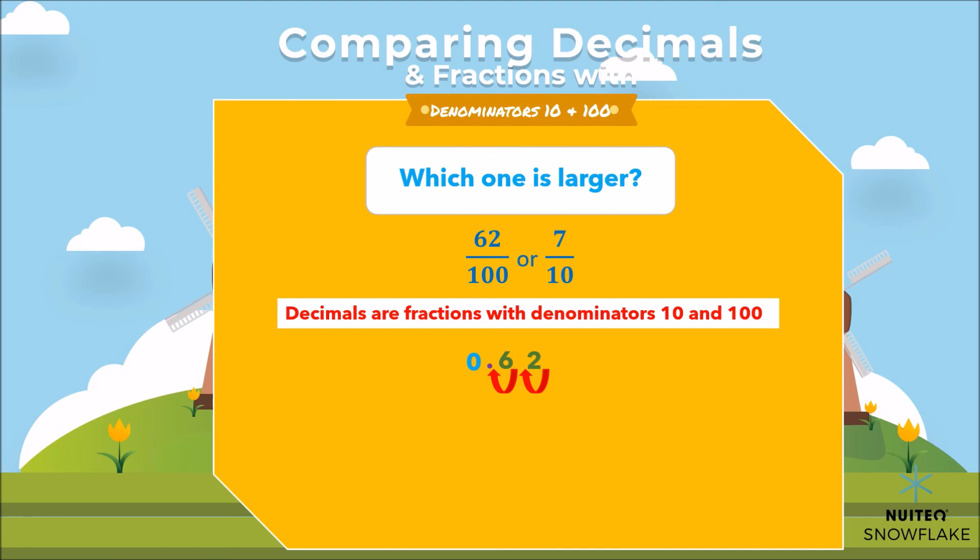That means that 62 hundredths are equivalent to 0.62, and 7 tenths are equivalent to 0.70. So, 0.70 is larger than 0.62, as 0.70 is closest to 1. Interesting right?